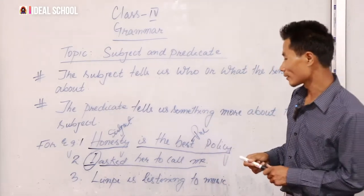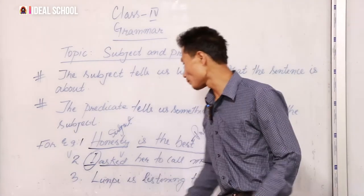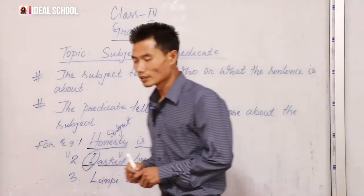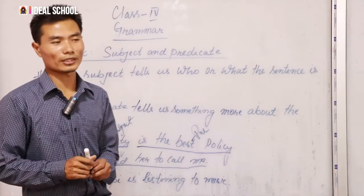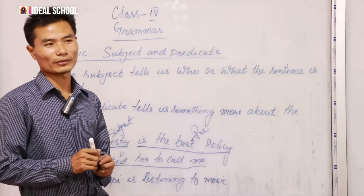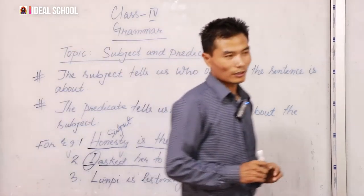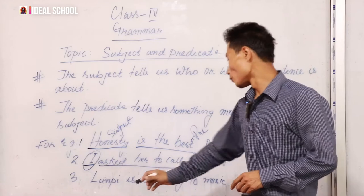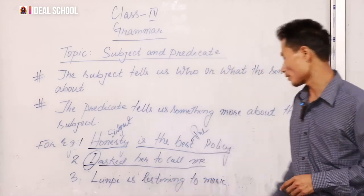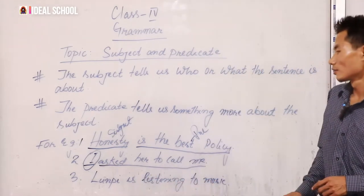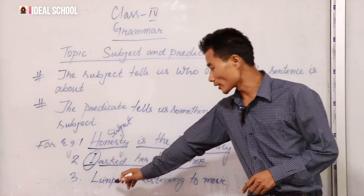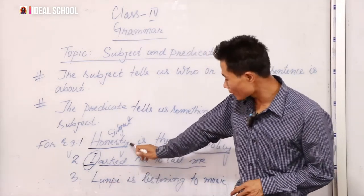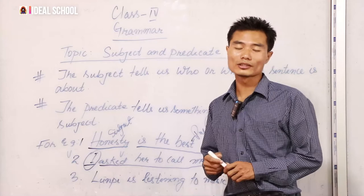Then the third example — let me give some more examples so you don't get confused about what is subject and what is predicate. The third example is: 'Lumpy is listening to music.' From the first and second examples, you can already see what is the subject and predicate clearly.